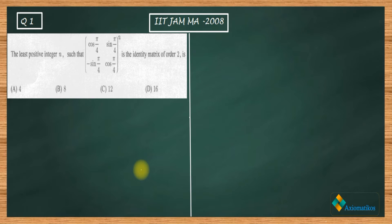There are two ways of solving this problem. The first is using basic matrix multiplication, and you can finish the question in one minute. The second uses a known result, with which you can solve it in just one second. I will explain both, starting with the basic multiplication approach, and then present the result.